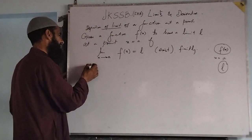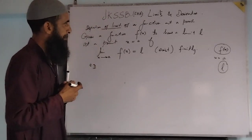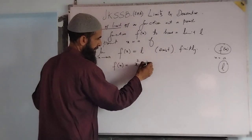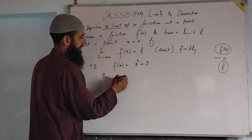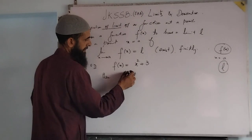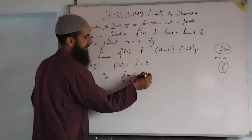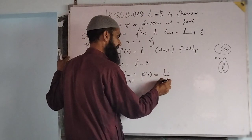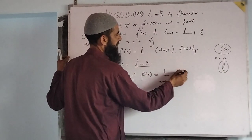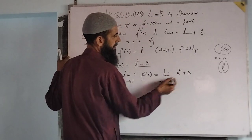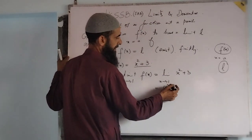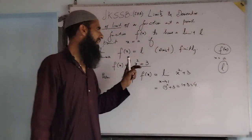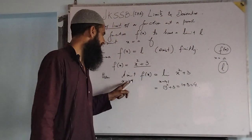Now see examples. Simple example: f(x) is equal to x squared plus 3. Then limit as x tends to 1 of f(x) is equal to — we write this as limit x tends to 1 of x squared plus 3. Replace x by 1, that is 1 squared plus 3, which is equal to 1 plus 3, it is equal to 4. Clearly, 4 is the limit of this given function at x equal to 1.